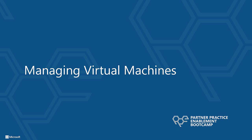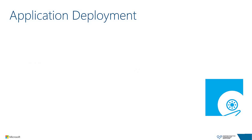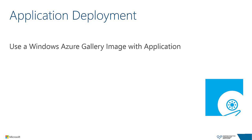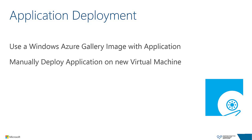Let's move on to discuss some general best practices for managing virtual machines in Windows Azure, starting with application deployment. The best way to get applications onto a Windows Azure virtual machine depends greatly on the application and the number of VMs. The simplest option is using an existing image from the Windows Azure image gallery or VM Depot. If not available as a gallery image, a manual deployment — starting a VM, connecting, and installing software — works well when installation is infrequent and relatively simple.